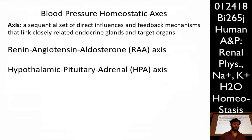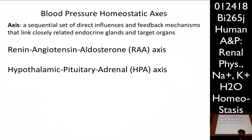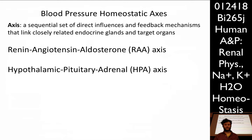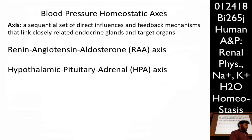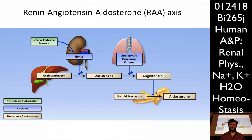The two axes we're going to talk about are the renin-angiotensin-aldosterone axis (the RAA axis) and the hypothalamic-pituitary-adrenal axis (HPA axis). The RAA axis and the HPA axis — the renin-angiotensin-aldosterone axis and the hypothalamic-pituitary-adrenal axis.